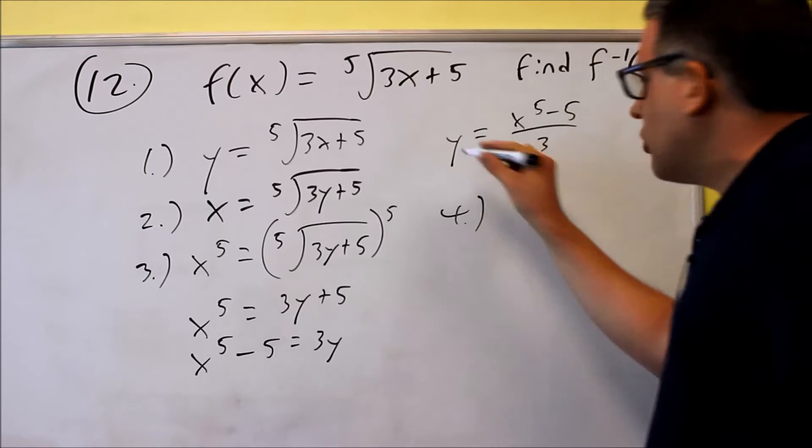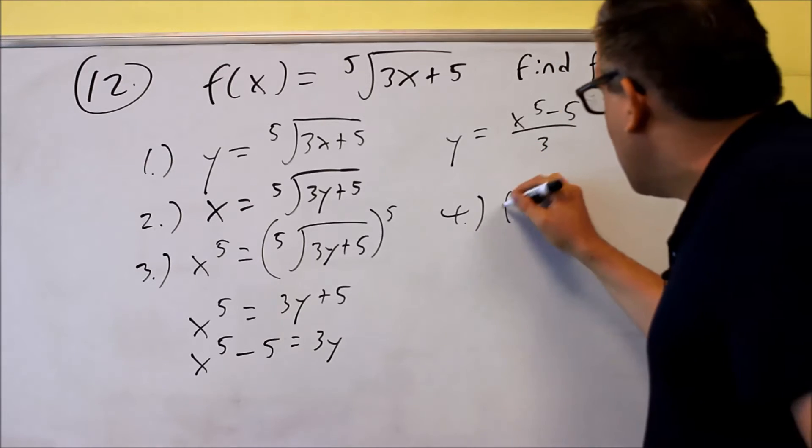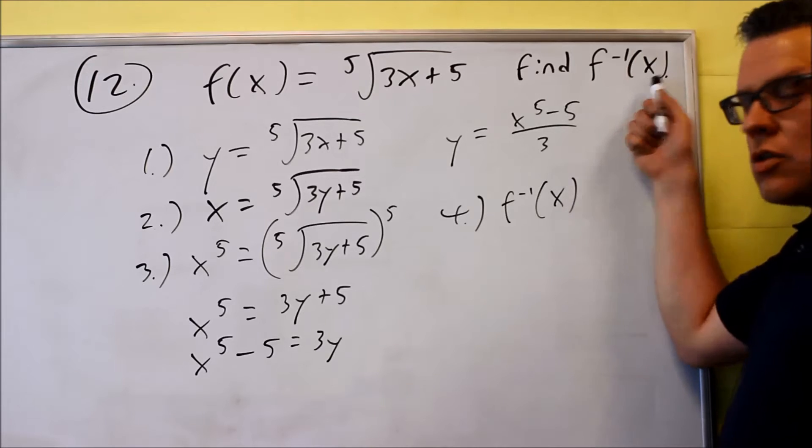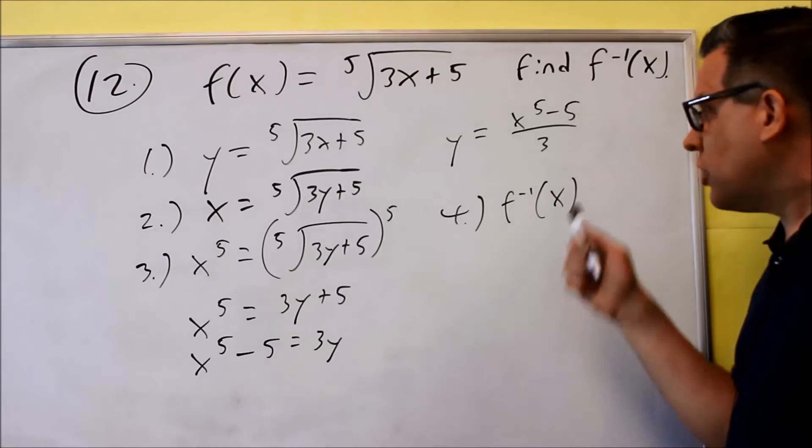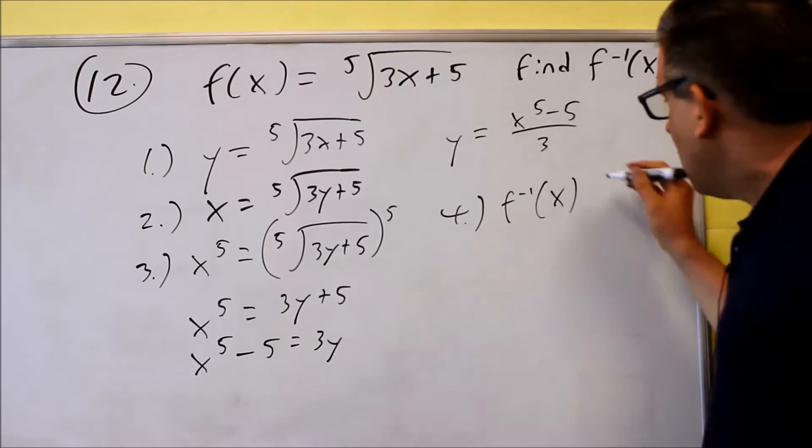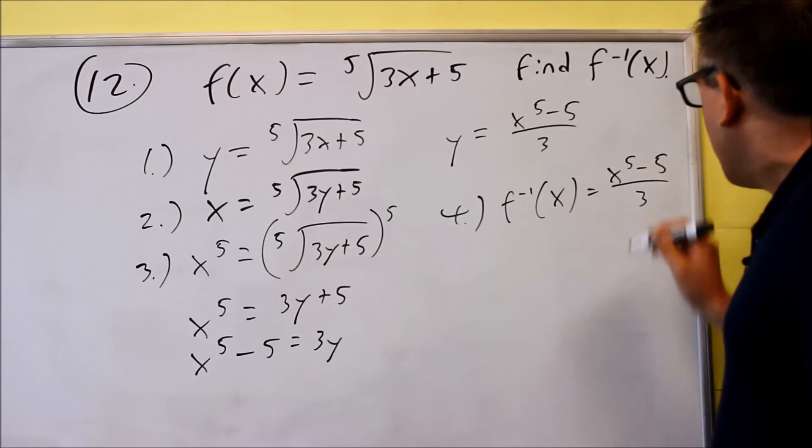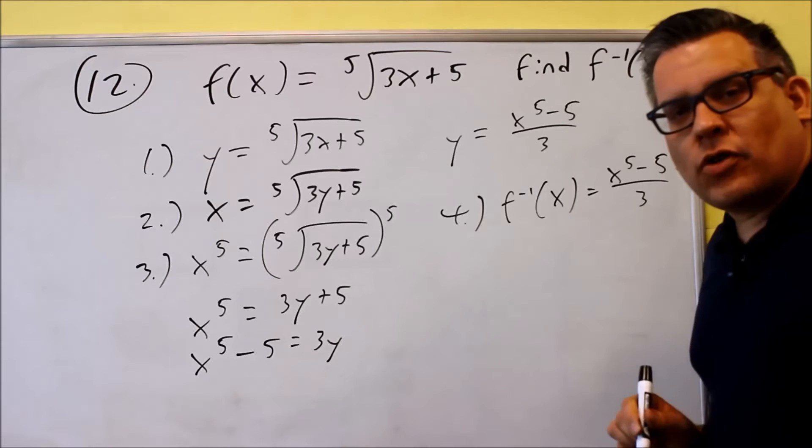The last step, number four, is you're going to change the y into the inverse notation because we want to write our answer correctly. It says find the inverse, so we don't want to leave our answer as y equals. We've got to make sure we have the inverse as part of our answer there. So f inverse of x equals x to the fifth minus 5 all over 3, that would be your inverse.